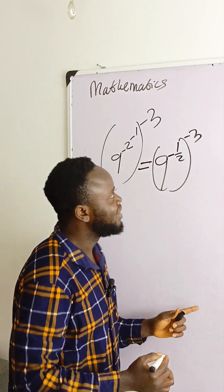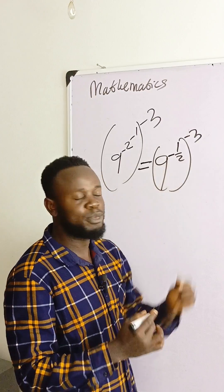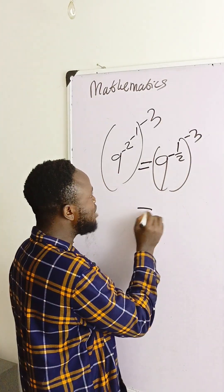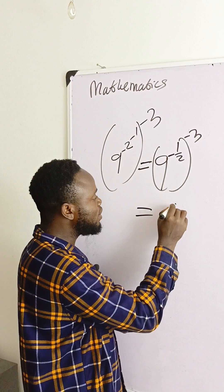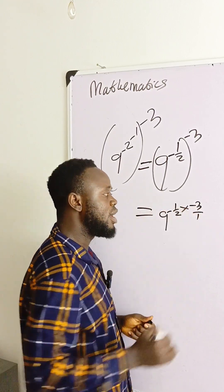Then when we have done this, you can now see that we have one exponent here, another exponent outside, so we can now multiply them together. What do I mean? This is 9 raised to power minus 1 over 2 multiplied by minus 3, let's say minus 3 over 1.